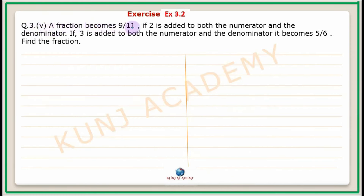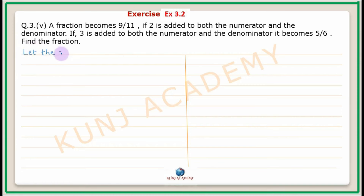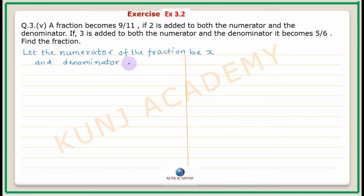Fifth part. A fraction becomes 9 upon 11 if 2 is added to both the numerator and the denominator. If 3 is added to both the numerator and the denominator, it becomes 5 upon 6. Find the fraction. Let the numerator be x and the denominator be y, so the fraction is x upon y.